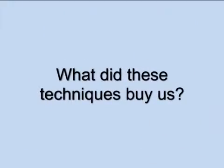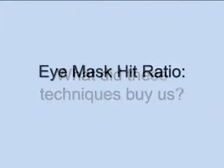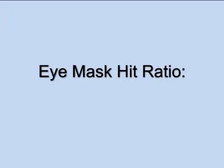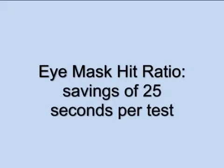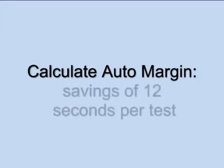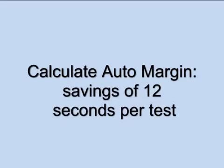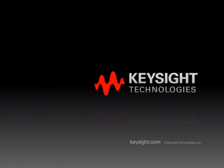In summary, the iMask hit ratio technique allowed us to reduce the sample size from 1 million to 100,000, knocking off over 25 seconds per test. Not only was the test time dramatically reduced, but the consistency and accuracy of the data is greatly improved. The Calculate Auto Margin feature saved 12 seconds per test compared to manually adjusting the mask dimensions. For more information and to find other ways that the 86100 DCA can reduce your cost of test, talk to your Agilent sales representative.